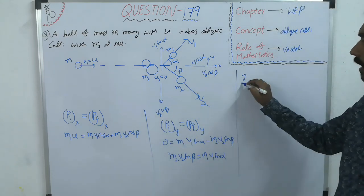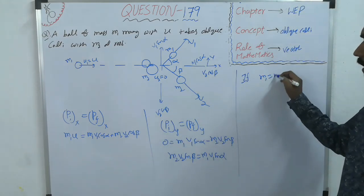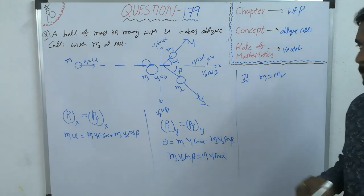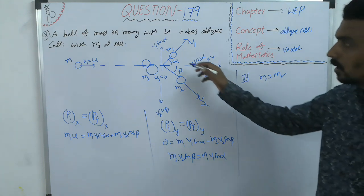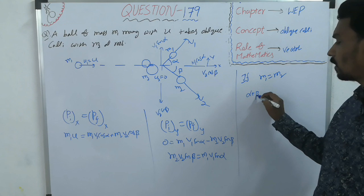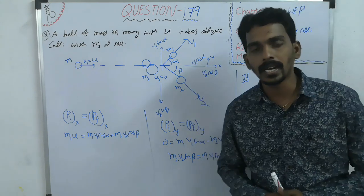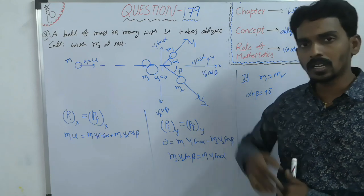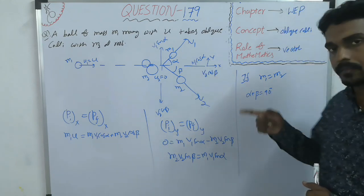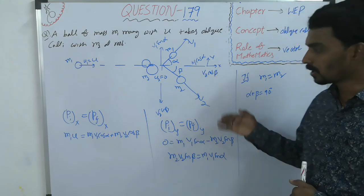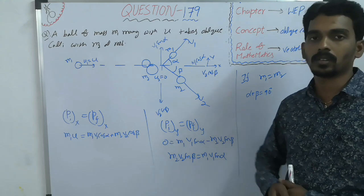And here, you will get one more condition also. If M1 equal to M2, you can prove it also. Then alpha beta will become 90 degrees. So they move in right angles after the collision, under the condition M1 equal to M2. Try to prove it on your board.